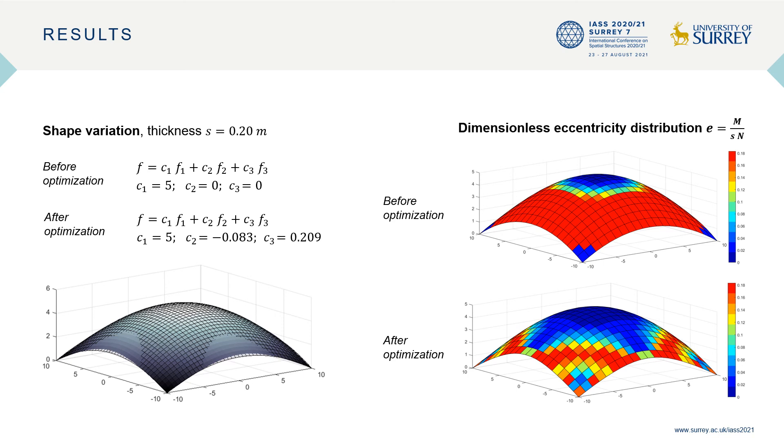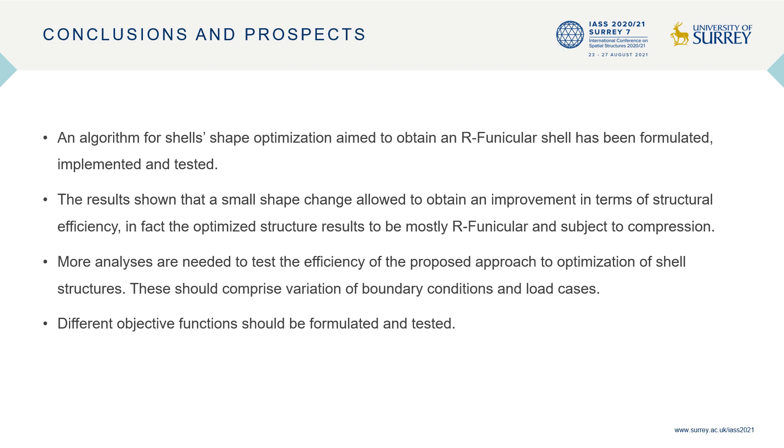The dimensionless eccentricity distribution before and after the optimization is shown in the right pictures. The color bar represents the values of the dimensionless eccentricity that increases going from blue to red, the latter meaning that the eccentricity is out of the cross-section middle third or that there is tension. An improvement is noticed, especially in the central areas of the shell.